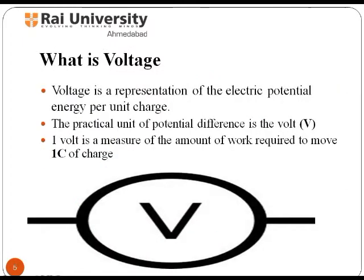Voltage may be defined as the potential energy that makes the electric current flow in a circuit by pushing the electrons around. One volt is a measure of the amount of work required to move one coulomb of charge, or we can say that one volt is equal to one joule of energy that can move one coulomb of electric charge.